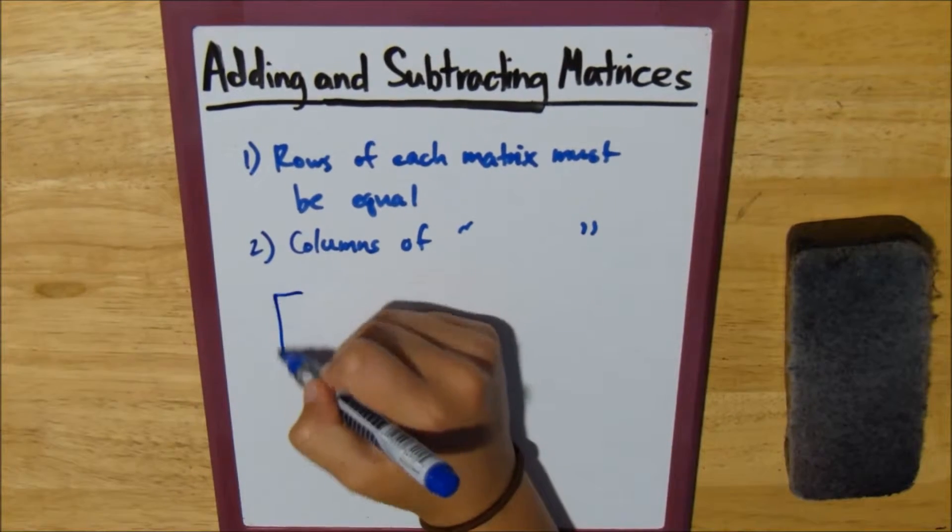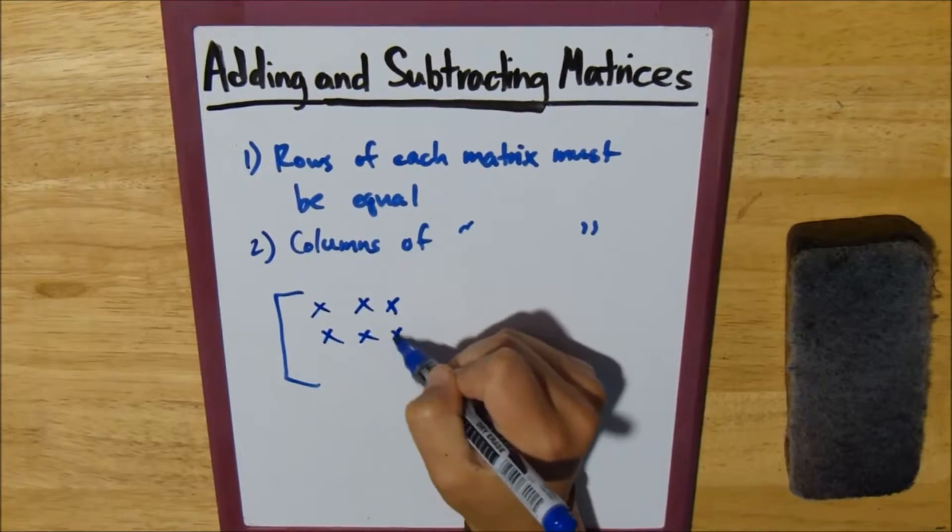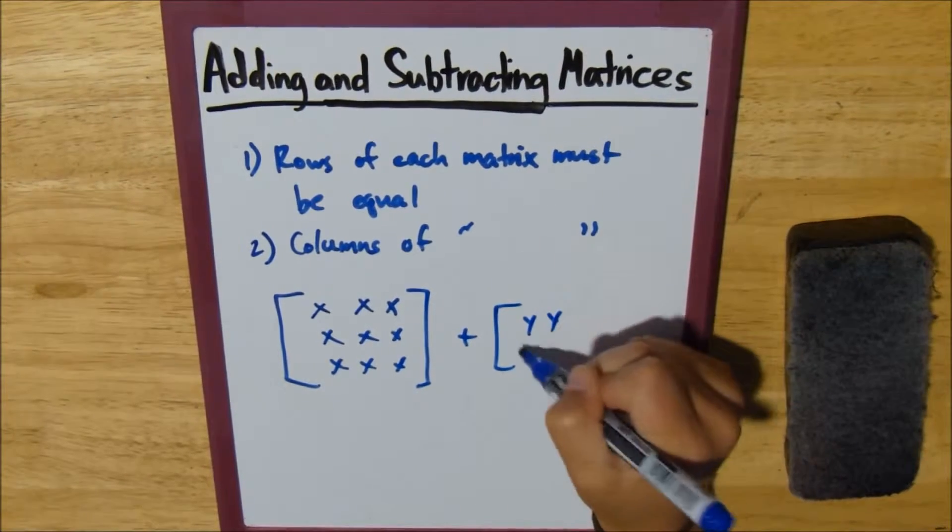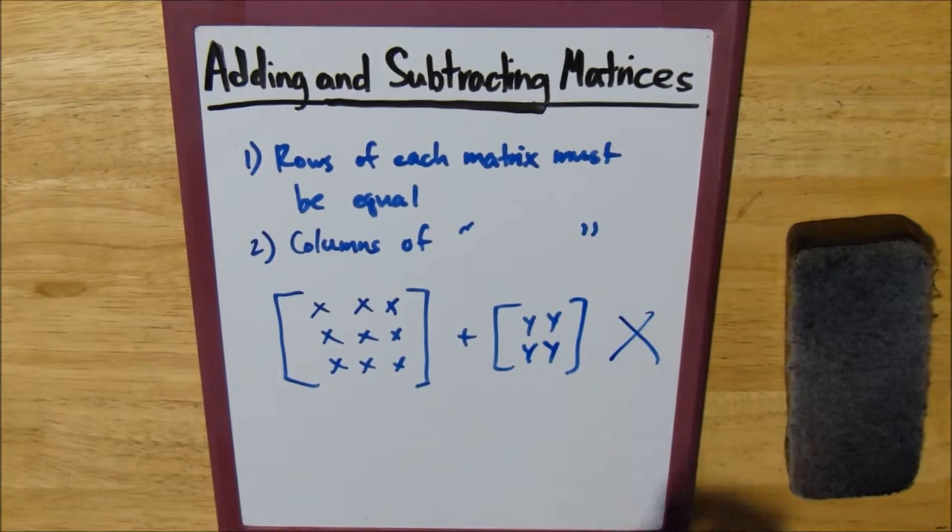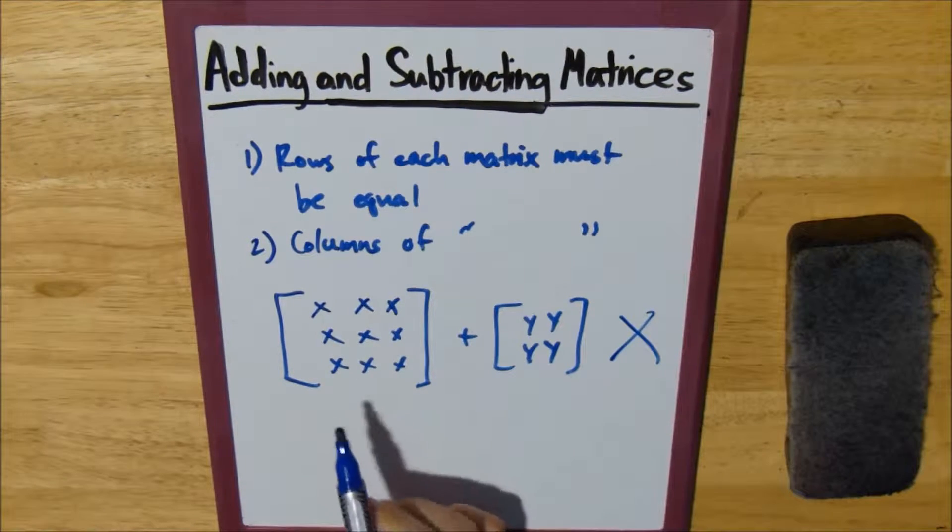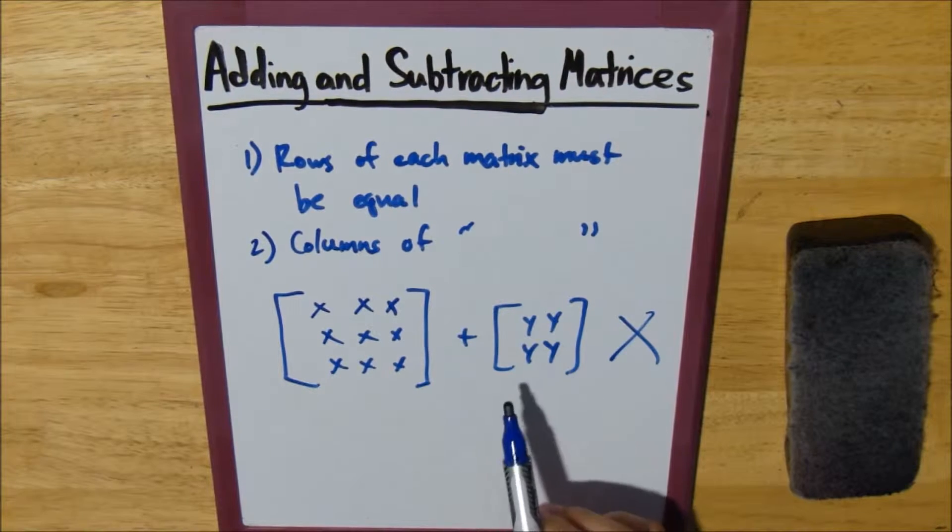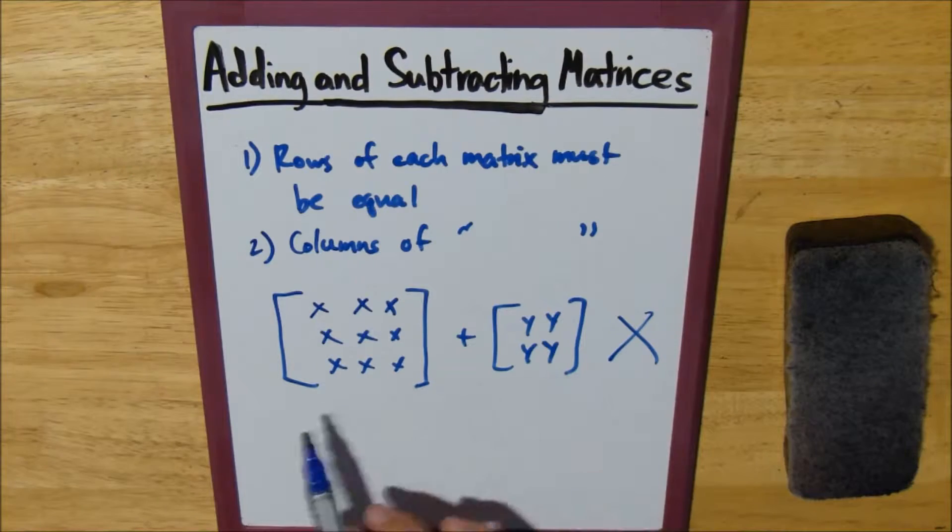Let's look at this example. Let's say we have some 3×3 matrix and we try to add it to a 2×2 matrix. Well, you just can't do this. You must add a 3×3 to a 3×3 or a 2×2 to a 2×2. The dimensions must be equal. This is not possible.